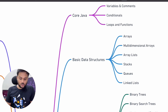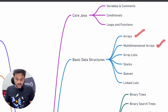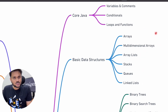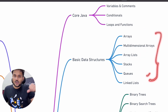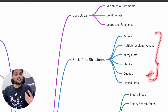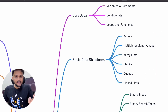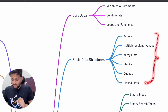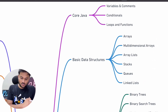Then we are going to talk about basic data structures in Java — for example, arrays, multidimensional arrays, array lists, stacks, queues, and linked lists. We are going to code all of these ourselves first. Then we are also going to see the internal implementation of all of these data structures in the Java collection library.